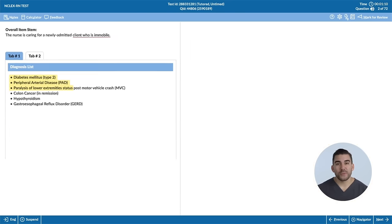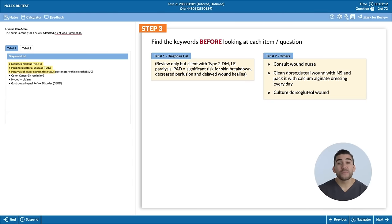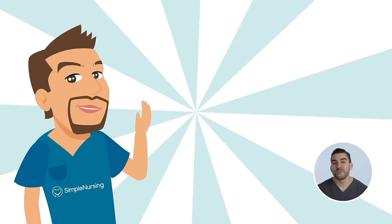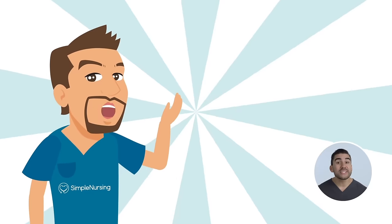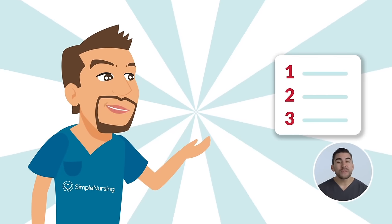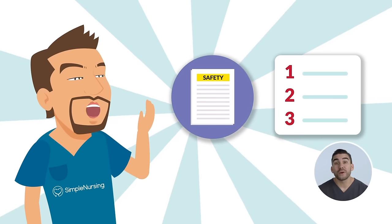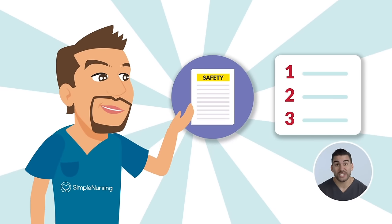Always find these key words before looking at each item or each question. Now that we've found each key term that risks safety, you can go through each item more confidently when answering each specific question. Remember: don't be scared, be prepared. Simply find each key term that risks safety before jumping into the question.